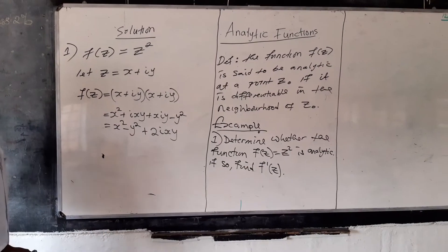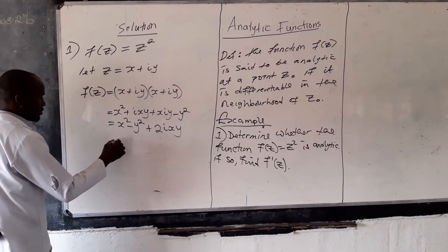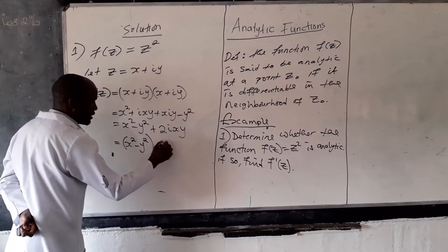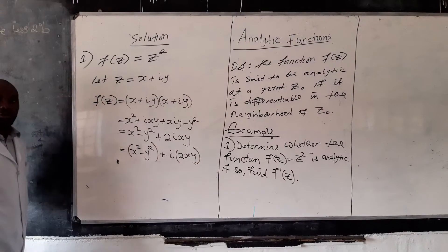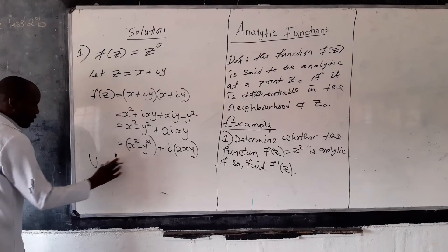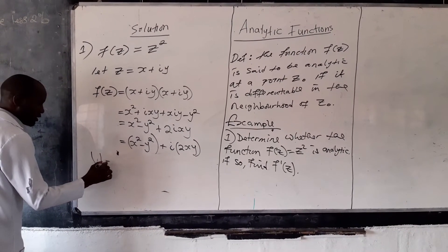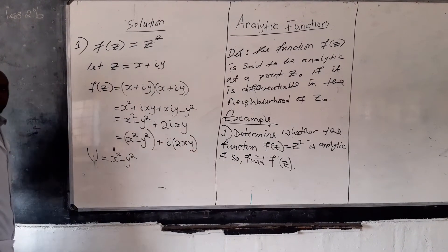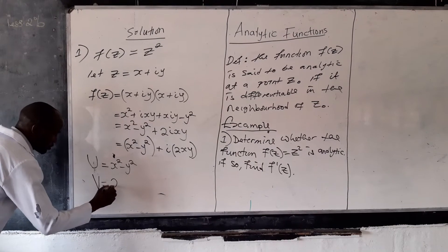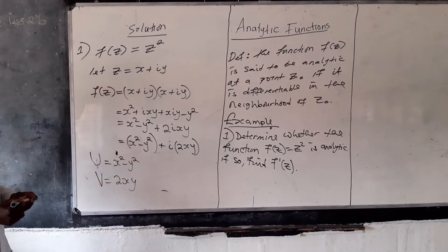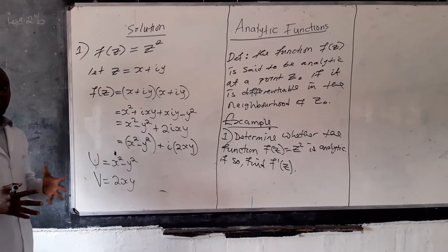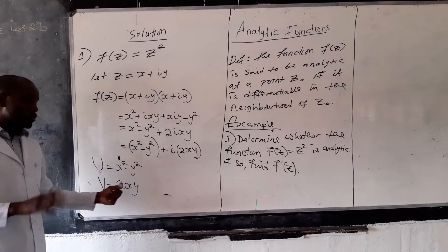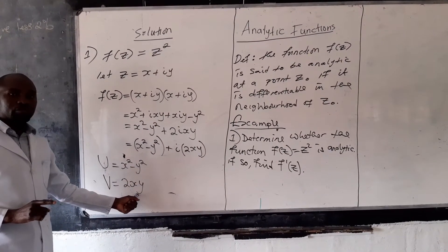When you look at this, we have the imaginary and also the real part of z. So x squared minus y squared is the real part of the function — we are going to call this u. So u equals x squared minus y squared. Then v is the imaginary part of the function, so v equals 2xy. We equate the real part to u and the imaginary part to v.